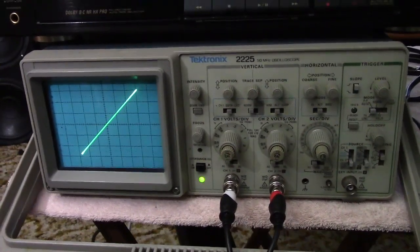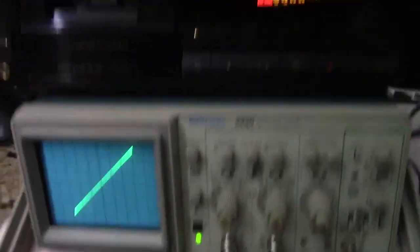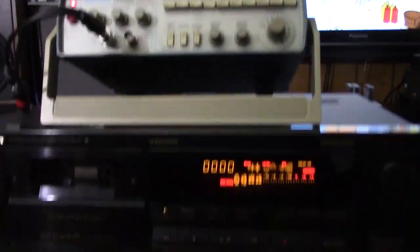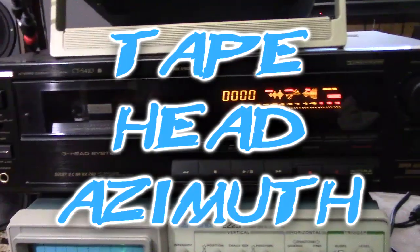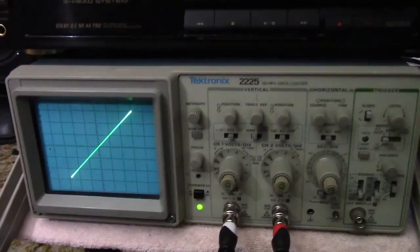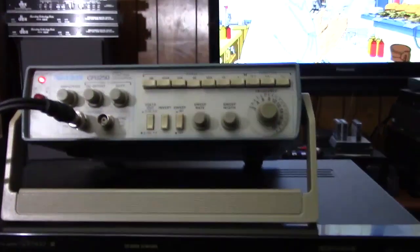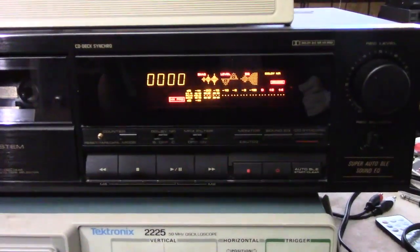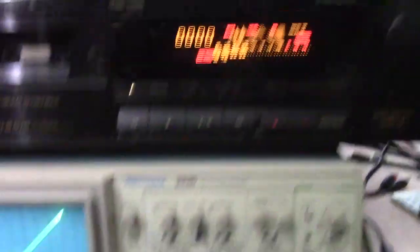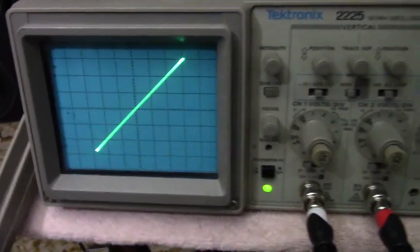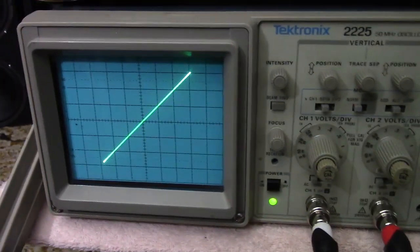I've got out my O-scope and my signal generator and what we're going to talk about today is tape head azimuth and the adjustments that you need to do it right. What I'm doing is I'm running a signal from the signal generator into the tape deck and then from the tape deck out to the O-scope.